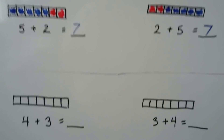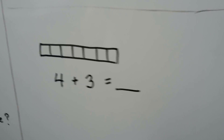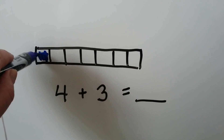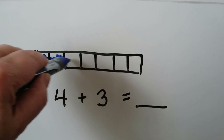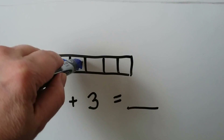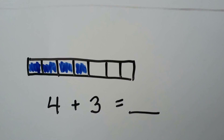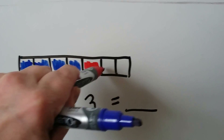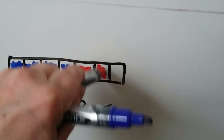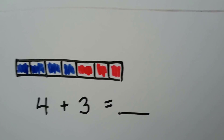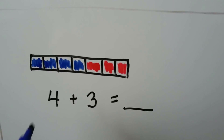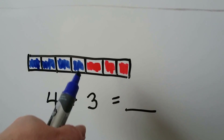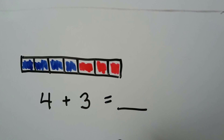Let's try it again. 4 plus 3. We can have 4 blue ones and 3 red ones. How many squares are colored in? 1, 2, 3, 4, 5, 6, 7.